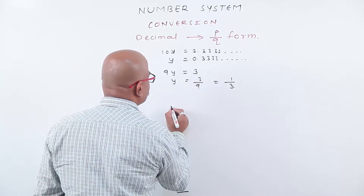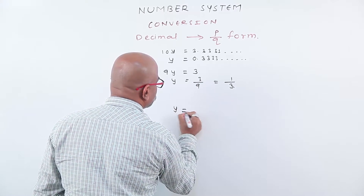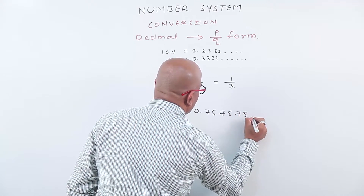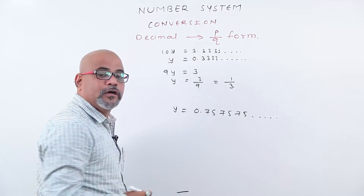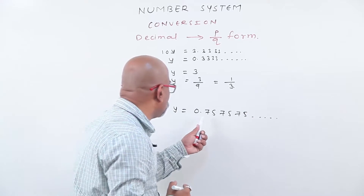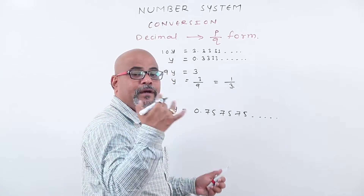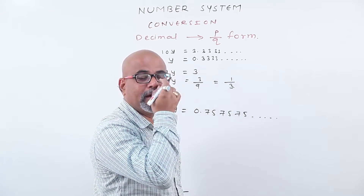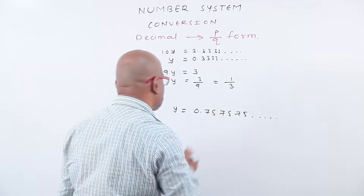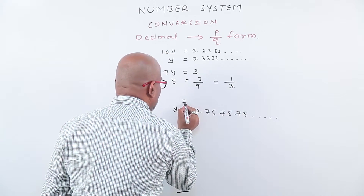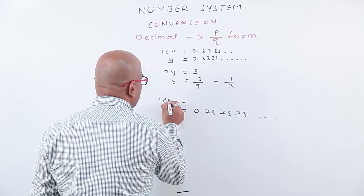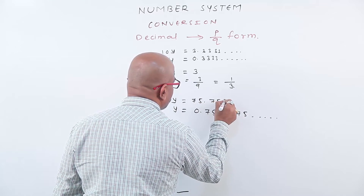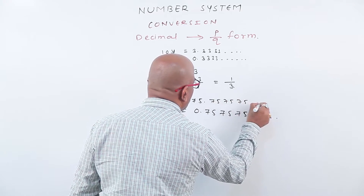Now let us take a second example. y equals to point seven five seven five seven five and so on. Here, we observe that two numbers are repeating again and again — that is seven five, seven five recurring. Two numbers are recurring. Therefore, multiply this y by 100. We get 100y equals to 75.757575 and so on.